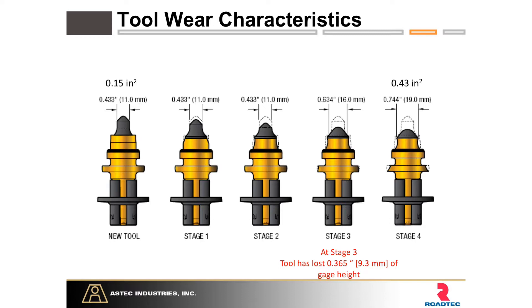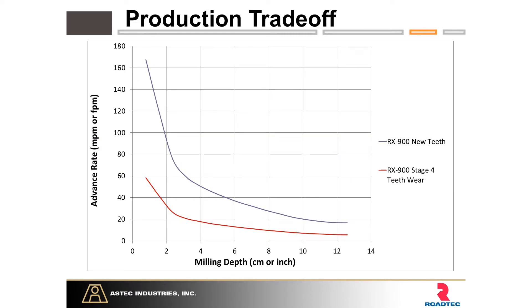Assuming our water system is working well and teeth are maintaining rotation, in a perfect world this is how your teeth will wear. Even if teeth wear perfectly, once you reach the right-hand side of the diagram the surface area is much larger. When surface area is larger, the same engine with the same horsepower must move that larger area through asphalt, causing a huge production loss — we'll see a fuel economy drop and a loss in feet per minute. So it's important to watch tooth wear and remove them in a timely manner.